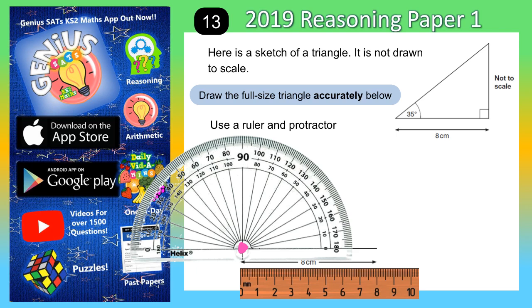Now, which end of the line are we going to? Well, seeing as the angle is on the left-hand side of the line, we need to put the centre of the angle measurer on the left-hand end of the line. So in other words, the start of the line.